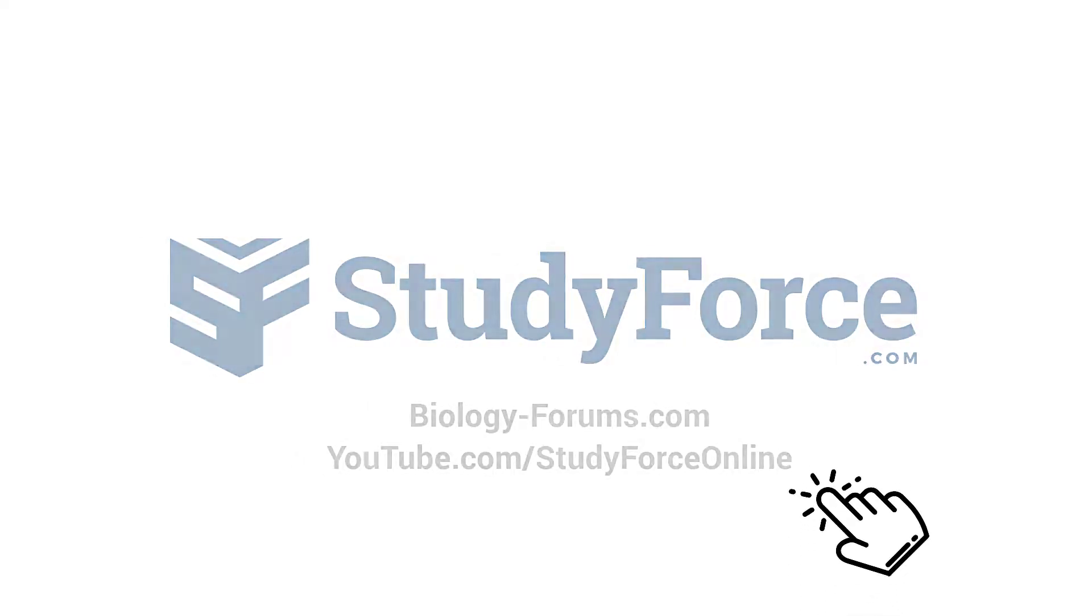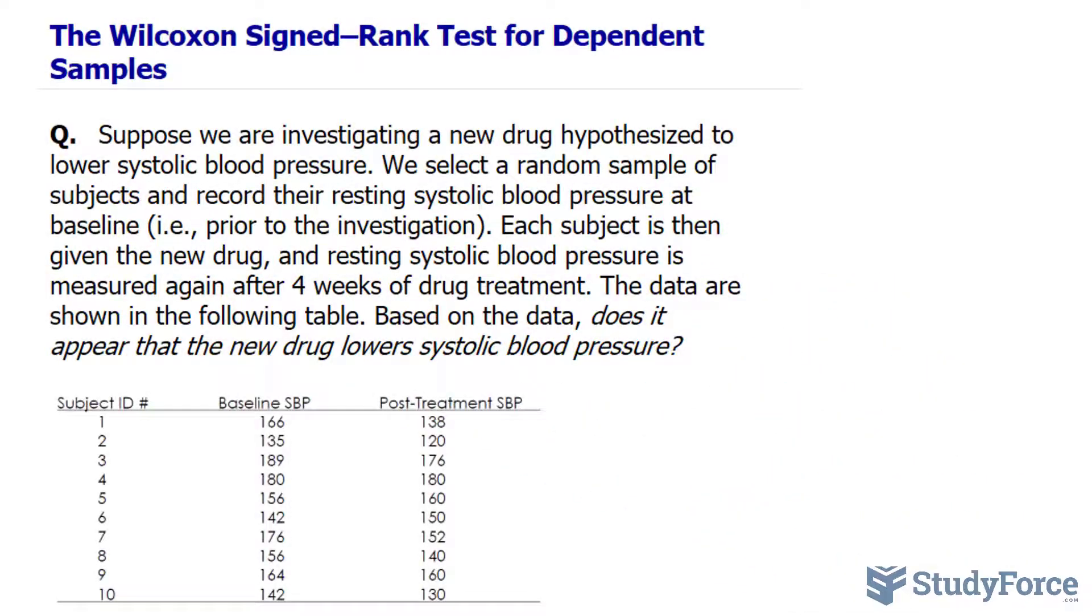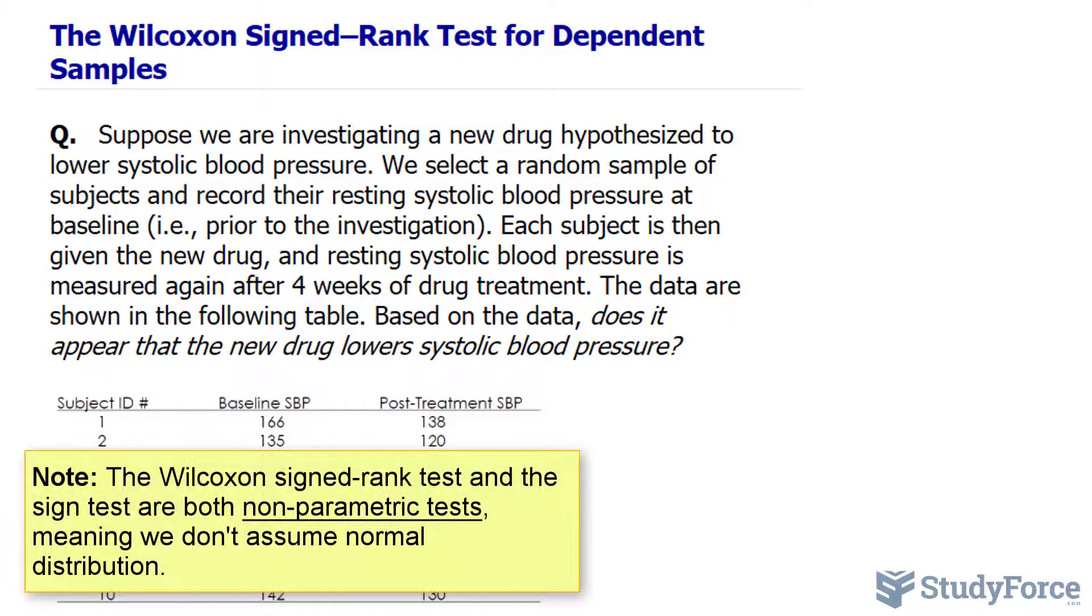In this lesson you will learn about the Wilcoxon Signed-Rank Test for Dependent Samples. If you've been following along with our videos, we recently did one on the Sign Test. The difference between the Wilcoxon Signed-Rank Test and that of the Sign Test is that here we find the differences and we also take into account their magnitude, whereas with the Sign Test we only worry about their direction, whether it's plus or minus from the baseline.